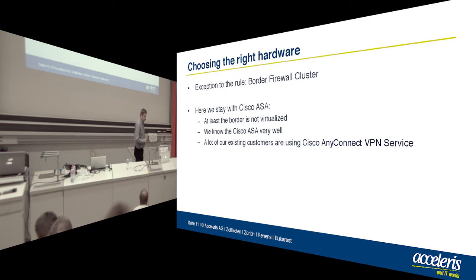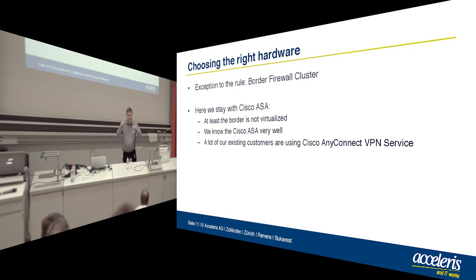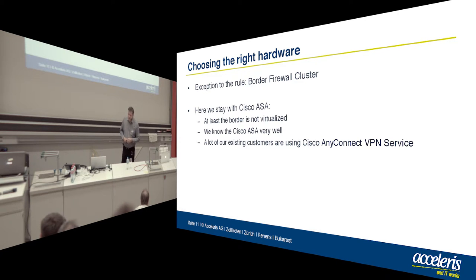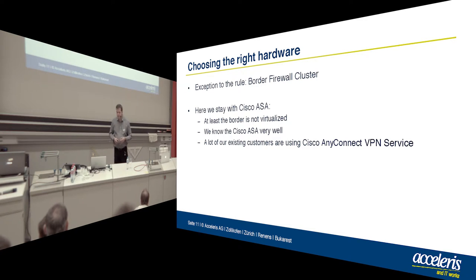There was one exception: we chose to keep Cisco firewalls on the border. I'm just used to the idea of having something that all traffic goes through, so you can see what traffic should be present. If you also virtualize the border firewall, it gets really nasty when you have security problems. Also, a lot of our customers already use Cisco AnyConnect. If we migrate them to the new platform, we just switch the DNS entries and they connect again to the new platform without reinstalling anything.